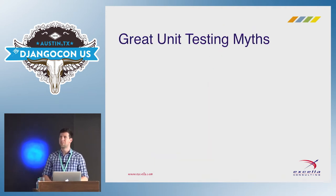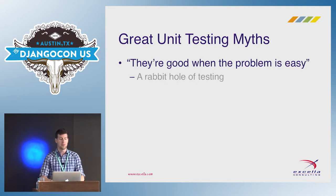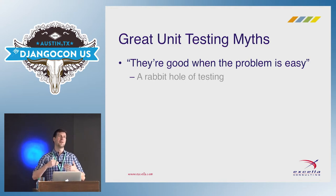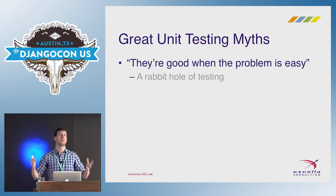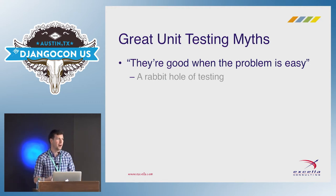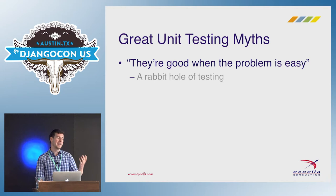When I ask people about this stuff, I get all kinds of stories about why they shouldn't. For example, they tell me it's really good when the problems are easy, but when they find other things to test, they have to write tests for their tests and the code gets really complicated. I call this the rabbit hole of testing — you're just going down different layers and it becomes really hard. Mocking can help us with that.